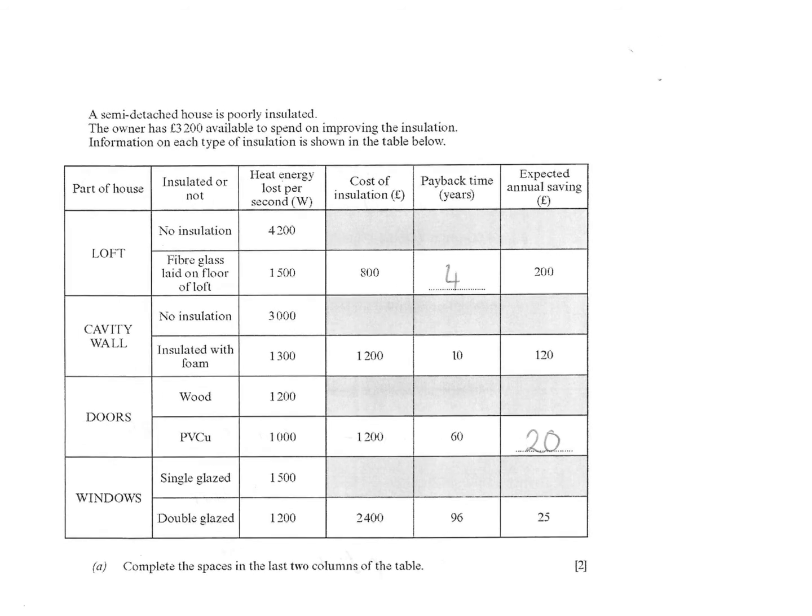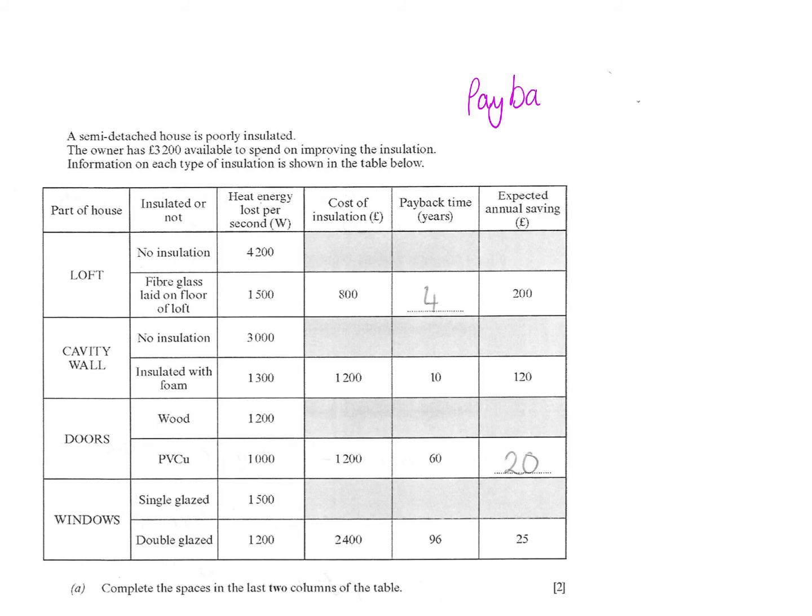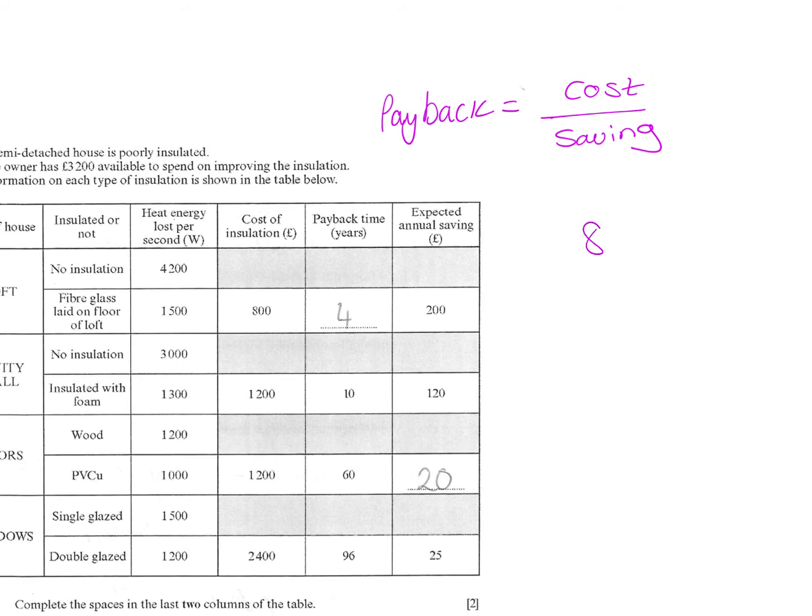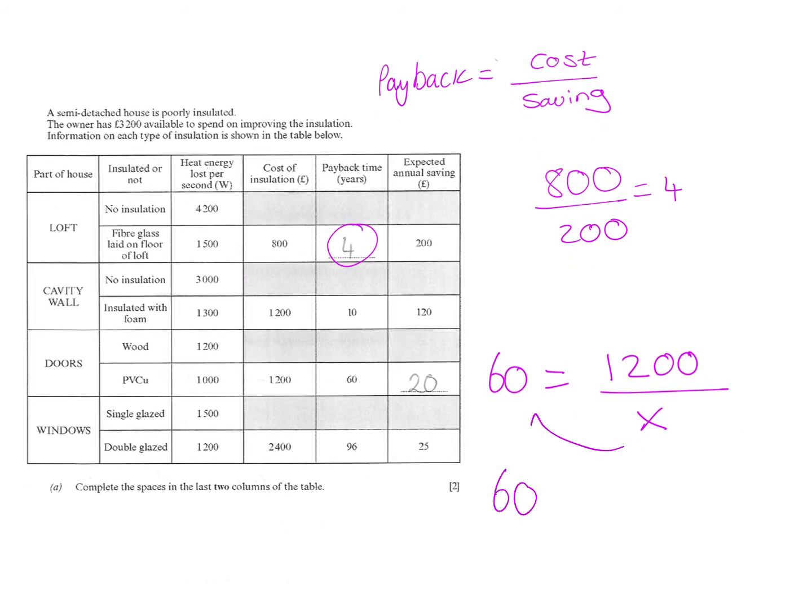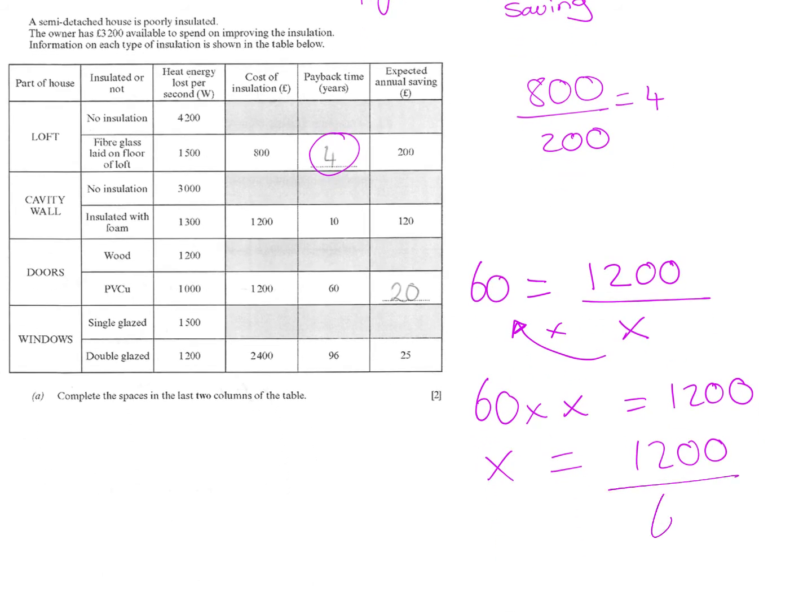The first thing we want to be thinking about when we've got this is that payback equals cost over saving. So it costs £800 to put in, we save £200 a year, so we divide them and that gives us 4, which fills in that one. The other one, we kind of have to rearrange the equation. We know payback is 60, we know the cost is £1,200, we do not know what the savings would be. If I bring that up here, so I do 60 times X equals £1,200. X then would equal £1,200 divided by 60, which would give you 20. So every year you save 20 pounds, and it would take you 60 years to pay back the total cost.